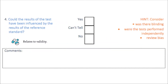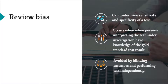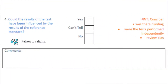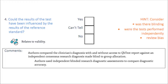A threat to validity arises when a patient's reference standard is applied or interpreted by someone who already knows that patient's diagnostic test result, and vice versa. Was there blinding? Were tests performed independently? Review bias can occur when the interpretation of the reference test is not independent of the index test, which weakens the result of retrospective studies. The impact on diagnostic accuracy of adding the QB test report to routine assessment was evaluated by comparing the clinician's diagnosis with and without access to the QB test report against an independent consensus research diagnosis made blind to group allocation. With the prospective design and adequate blinding used in this study, the risk of review bias is lessened.